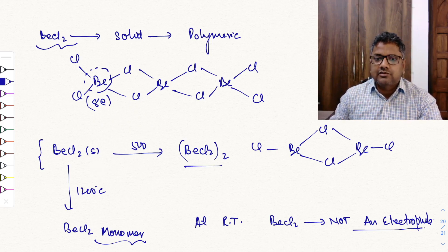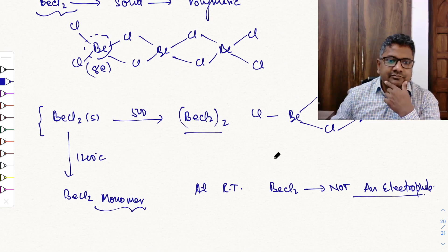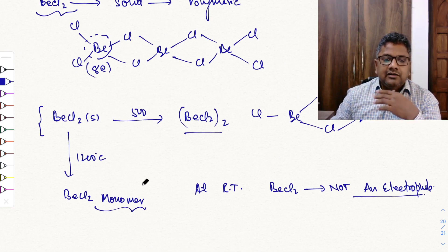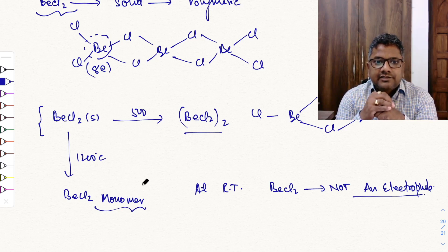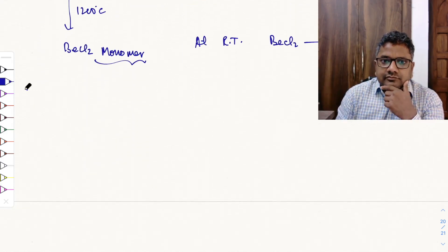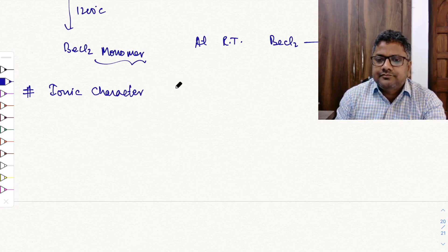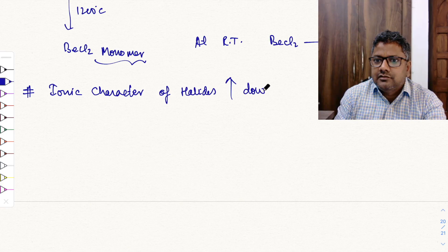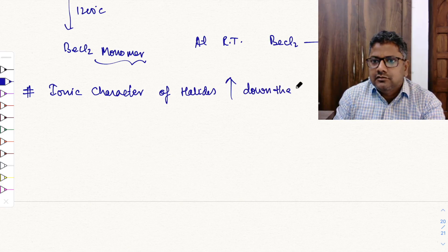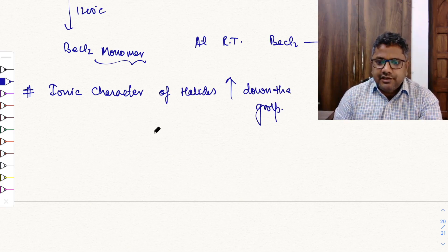The rest of the halides (of magnesium, calcium, strontium, barium) are ionic halides. The ionic character of halides increases going down the group — from beryllium to barium, ionic character increases.